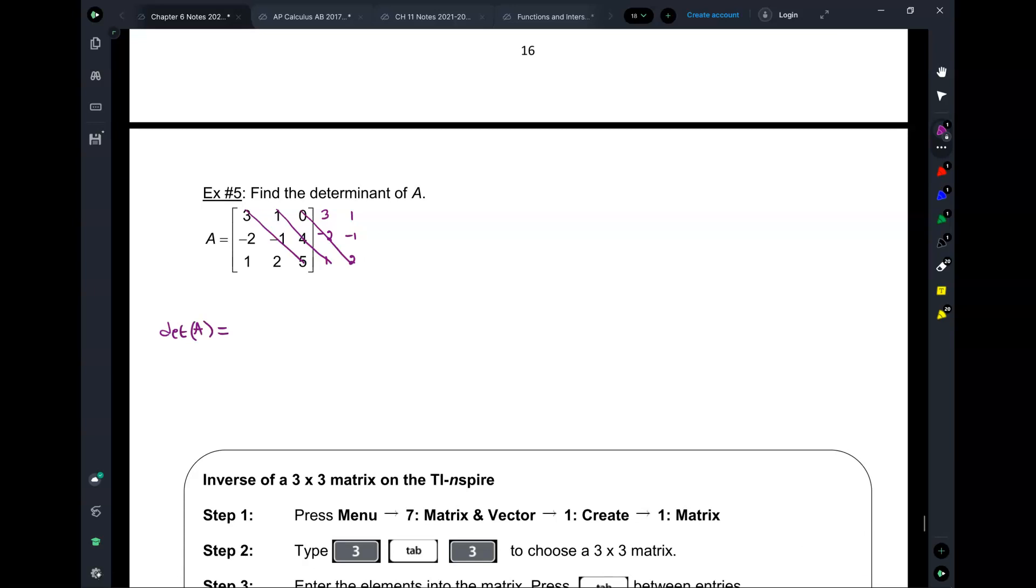Now, let's draw diagonals. So determinant of A is equal to, on this first diagonal, I have three times negative one times five. How much is that? Negative 15. Plus, one times four times one is four. Plus zero times this times this. Zero. Love it when we have zeros.